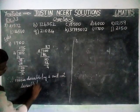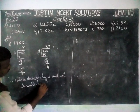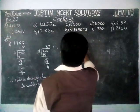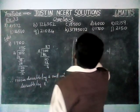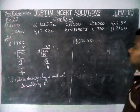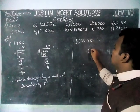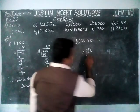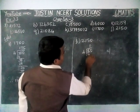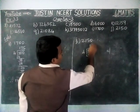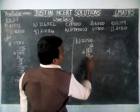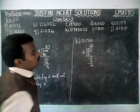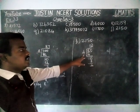Next, the last sum: option J, 2150. First, we take the last 2 digits and divide by 4. In 50, we have 1 four, remaining 1, giving 10. 2 fours are 8, remaining 2. Since we are getting remainder 2, this number is not divisible by 4.